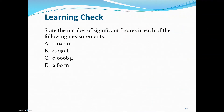A few practice problems. Letter A is 0.030 — the zeros in the front do not count, the zero to the right does, so that's two sig figs. Letter B is 4.050 — there's a decimal place, all zeros to the right count, and there's a sandwiched zero, so that's four sig figs. Letter C — none of the leading zeros count, and there's only one sig fig. Letter D — that is three sig figs because there's a decimal place and the trailing zero is to the right.